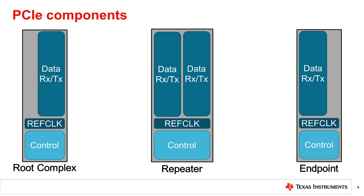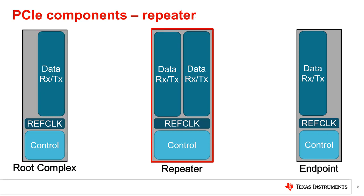Here we have a diagram containing devices that are common in a PCIe link. A root complex is the interface between the system CPU and memory and the rest of the PCIe structure. The root complex is either integrated into the CPU directly or is external to the CPU as a discrete component. A repeater is a signal conditioning device — repeaters can fall into two categories: retimers and redrivers. Both are common PCIe components used to maintain signal quality of high-speed links. In our example, we will be using a PCIe 4.0 compliant retimer. An endpoint is a general term for a PCIe end component; in our case, let's assume that the endpoint is a graphics processing unit, or GPU.